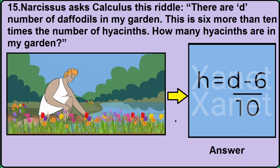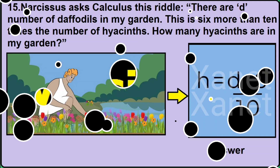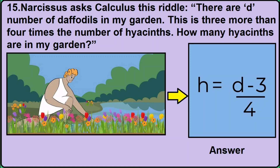Now in version 4, it is asked: 'this is 6 more than 10 times the number of hyacinths.' Then you need to click the option in which it is written H = (D − 6) / 10. Now in version 5, it is asked: 'this is 3 more than 4 times the number of hyacinths — how many hyacinths are in my garden?' Then you need to click the option in which it is written H = (D − 3) / 4.